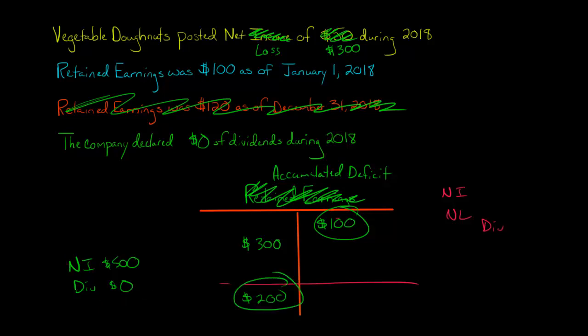So this was the ending balance of retained earnings, which is now accumulated deficit for this period. We ended with a cumulative deficit of $200. But next period, we have net income of $500, and dividends is zero. So then we would have an ending balance at the end of that period of retained earnings of $300.